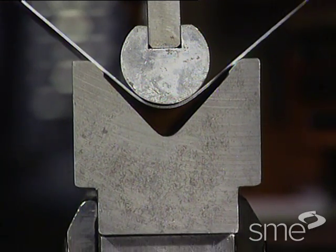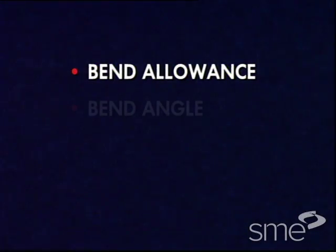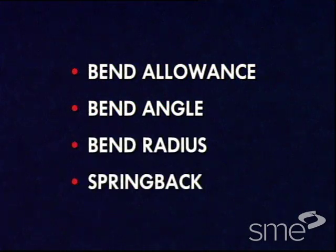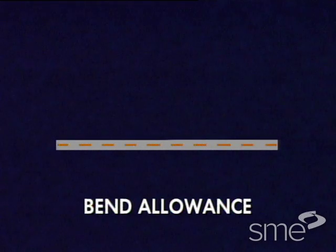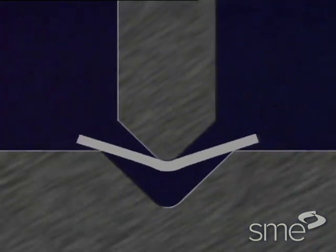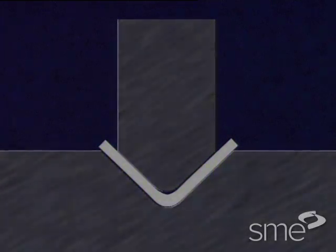The principal terms used to describe bending on press brakes are bend allowance, bend angle, bend radius, and spring back. Bend allowance is the pre-bent length of material that must be included in a blank to allow for any deformation that occurs due to the bending operation.